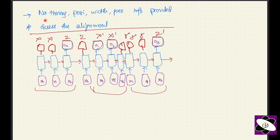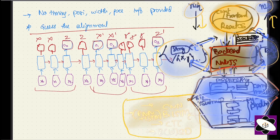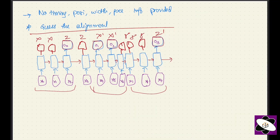Since no timing, position, weight, or pace information is provided — no perfect heuristic — we need to guess the alignment. Techniques like most likely sequence, highest probability sequence, weighted average, or beam search decoding can be applied to find the most probable alignment.